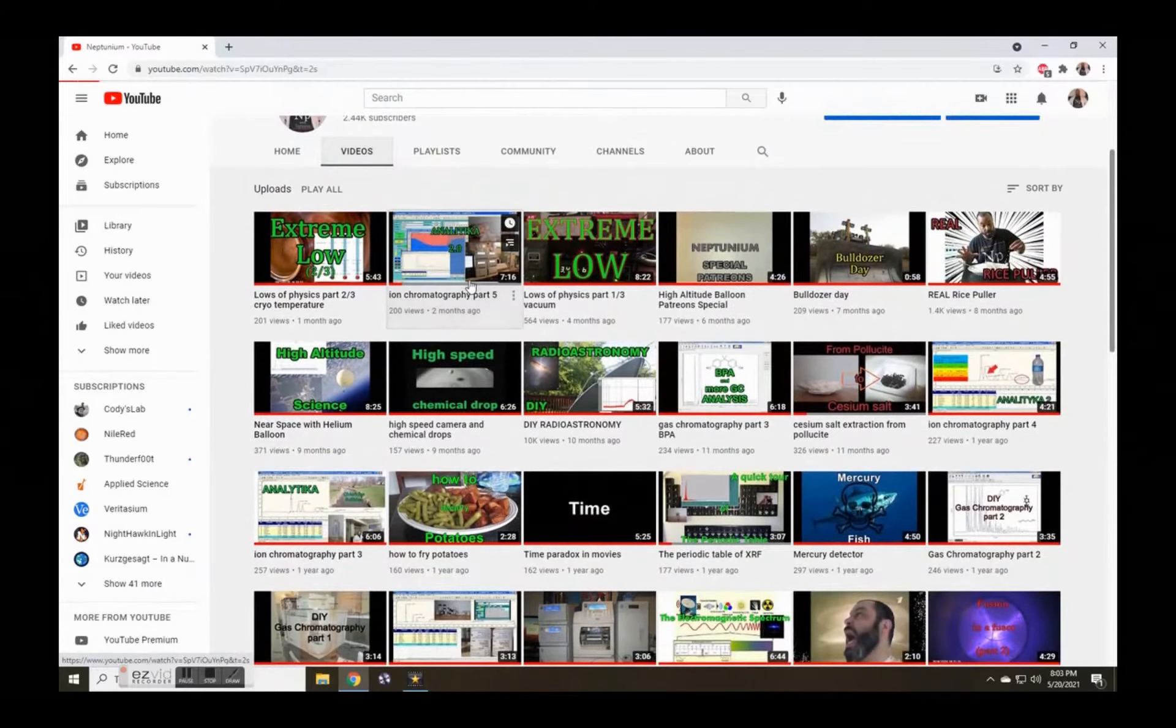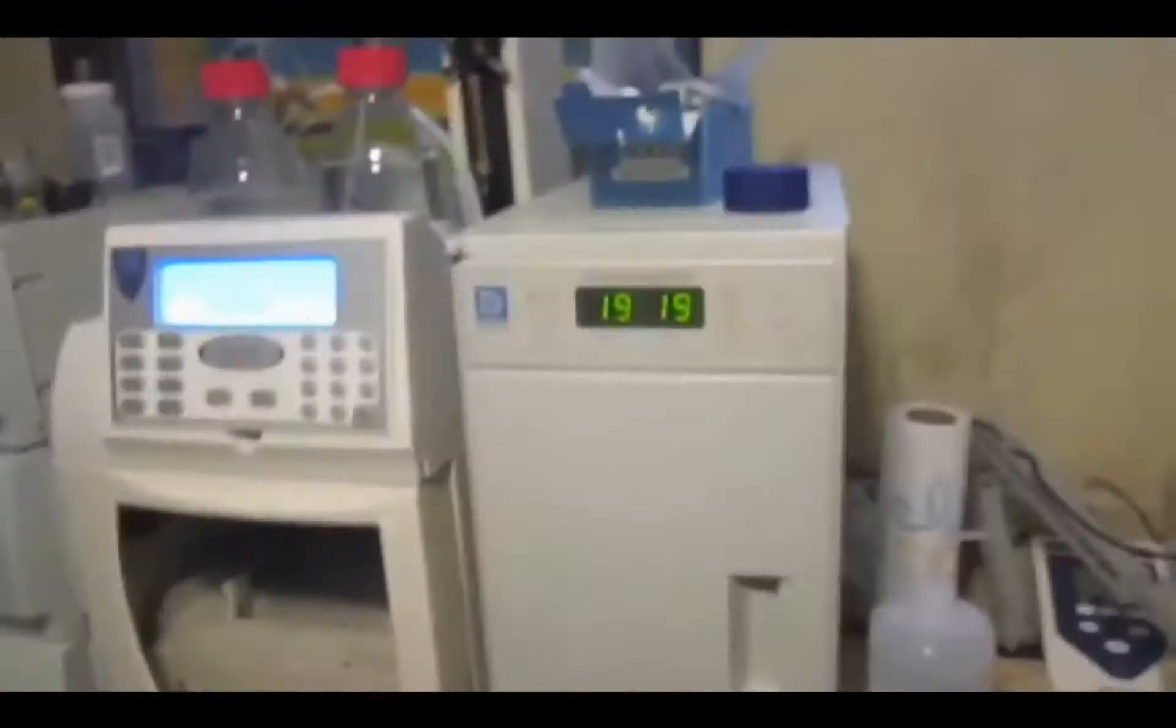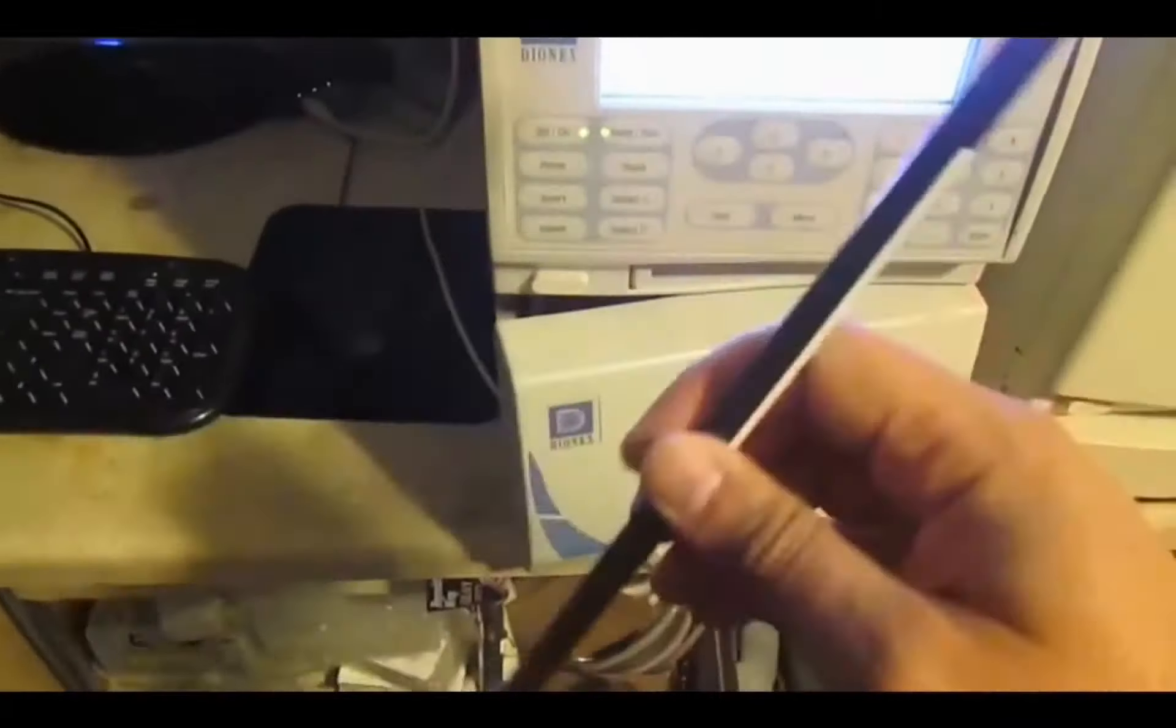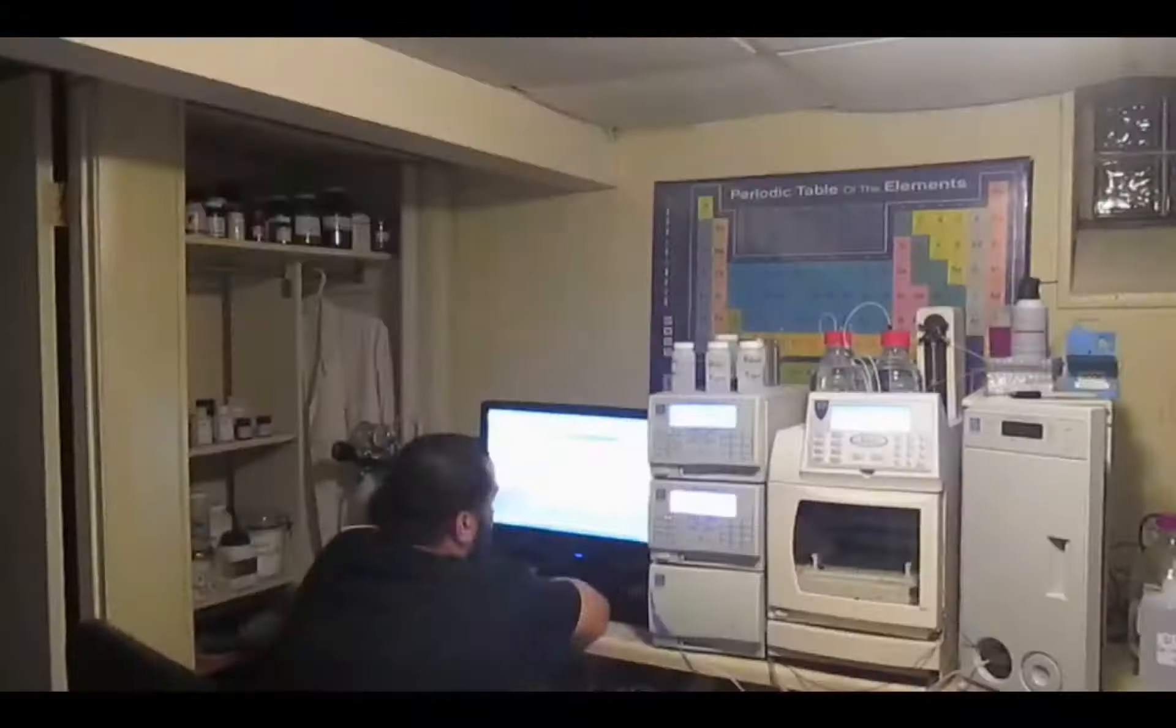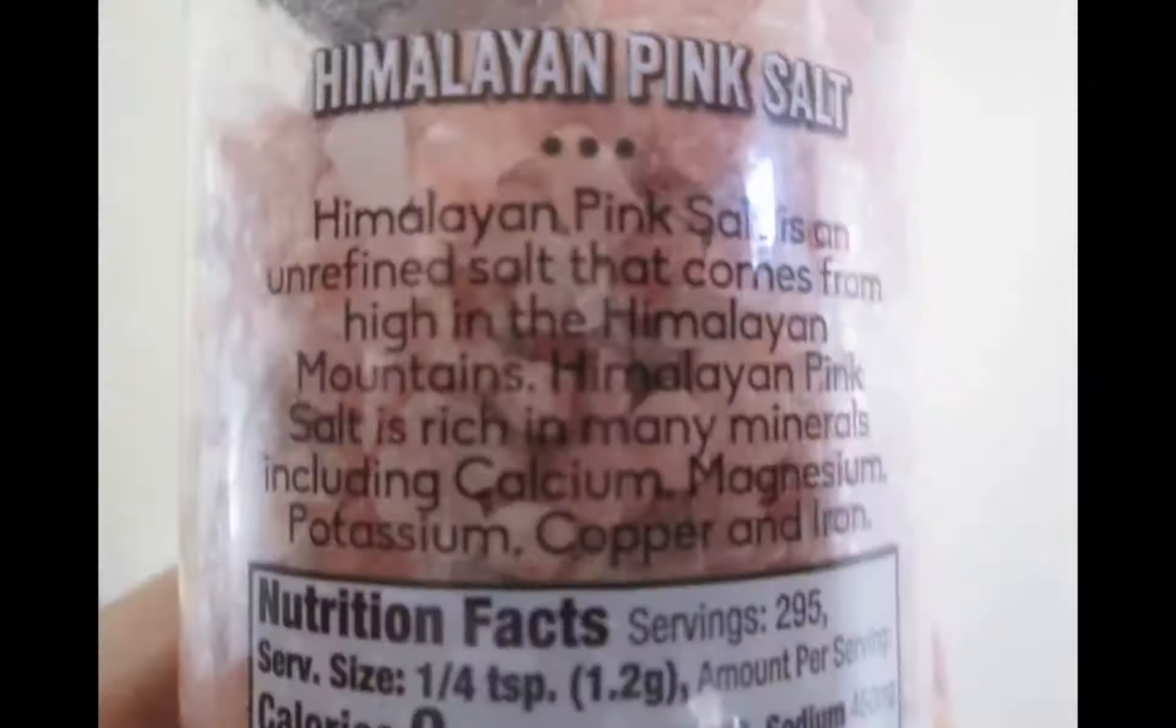Hello and welcome. On the previous Ion Chromatograph video, I analyzed a variety of commonly found items ranging from food to body fluid. I reported finding fluoride in my urine and in my whiskey, which I thought was odd, and since no one called me out on this, I'll just call myself out.